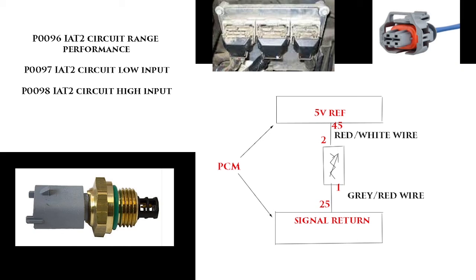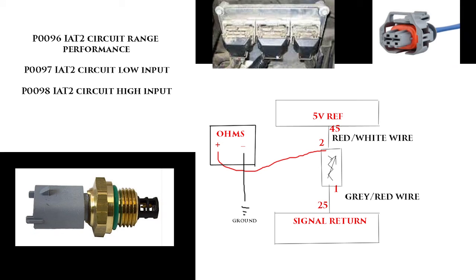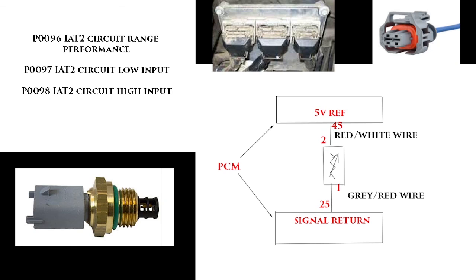Then we're going to move on to checking our signal circuit for a short to voltage. The wire in question is the red and white wire. With the PCM disconnected and the intake air temp sensor disconnected, you want to check for voltage on pin 2 and turn your key on. If you are getting voltage there, even a small amount, then you have a short to power and need to figure out where that's coming from — check for a chafe in the wire. You must have the PCM connector disconnected because that wire carries a 5-volt reference; if the PCM is connected and you're getting 5 volts, it's working properly.